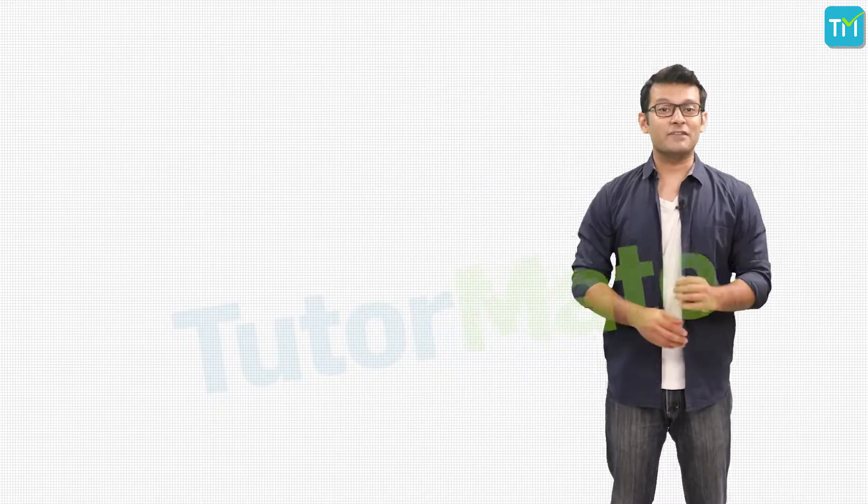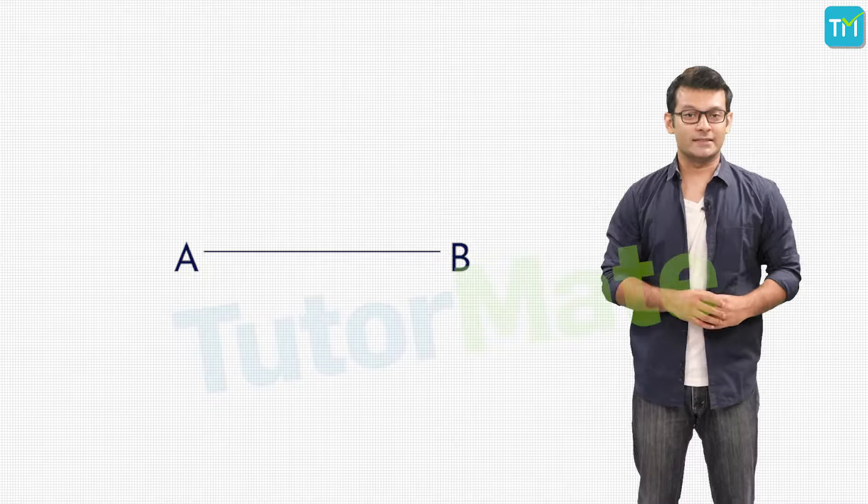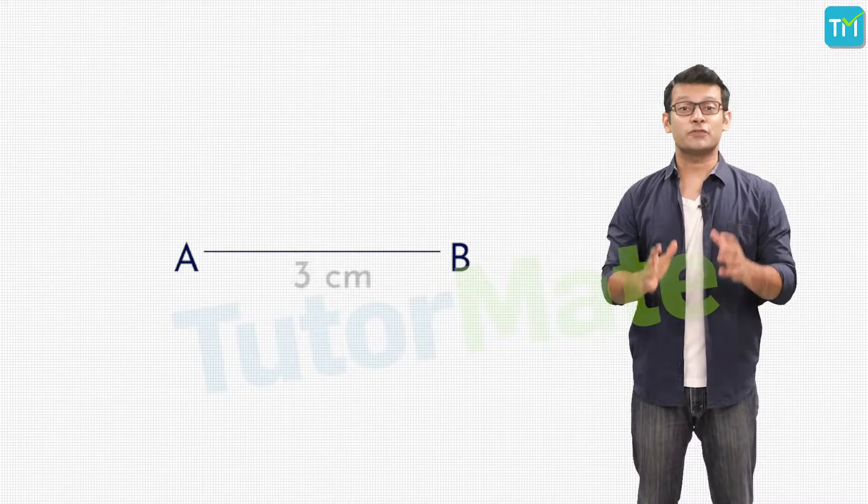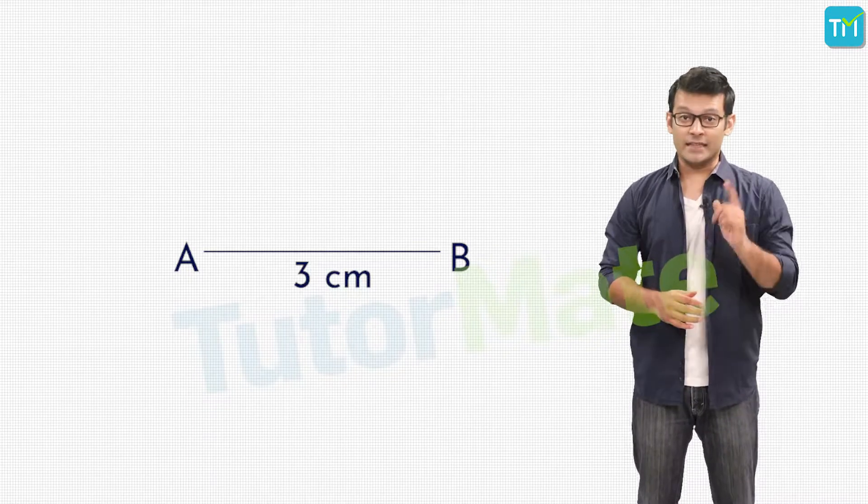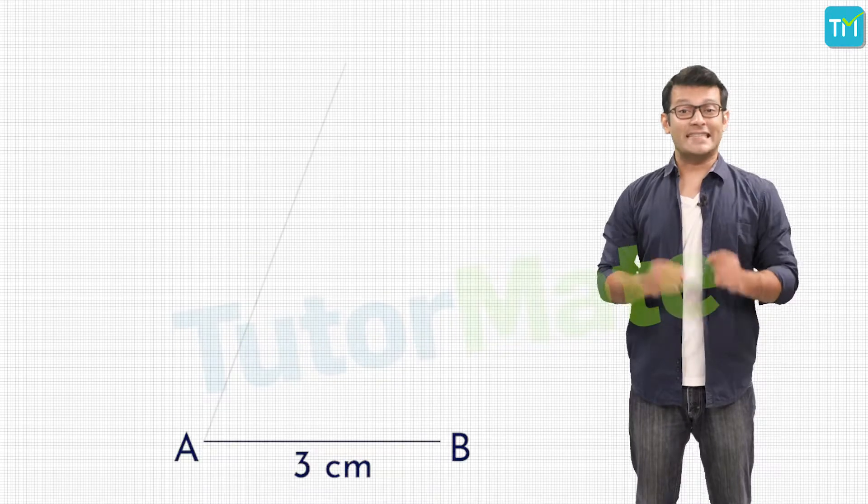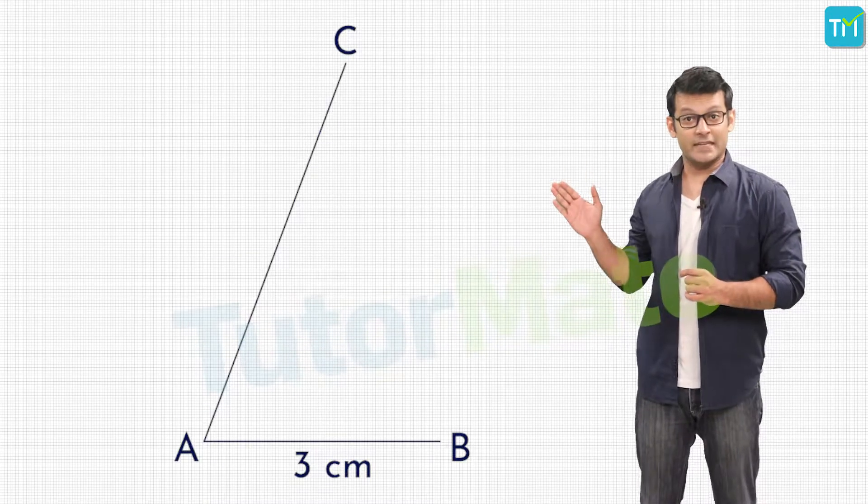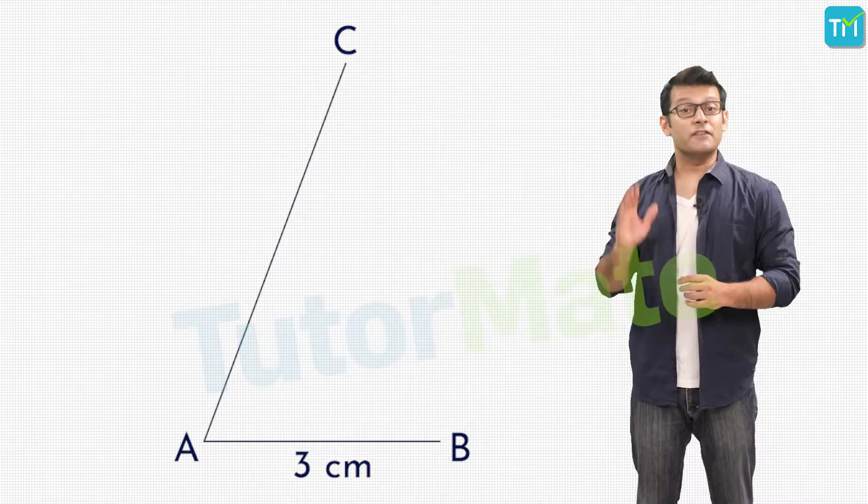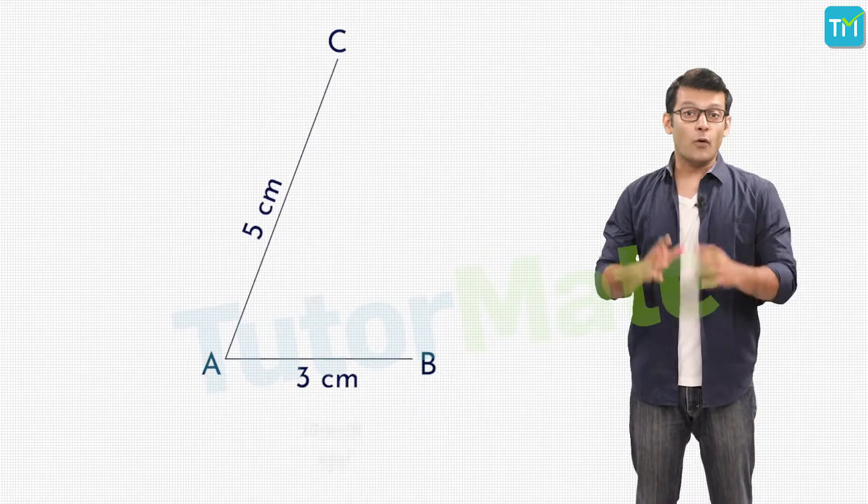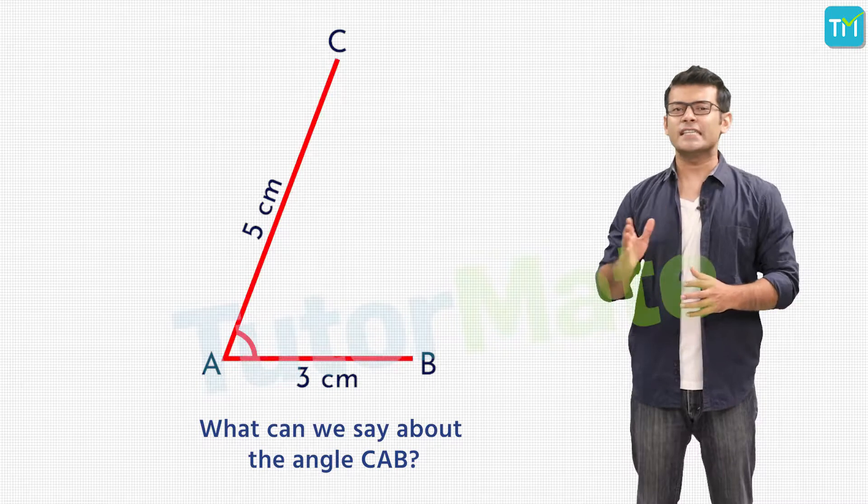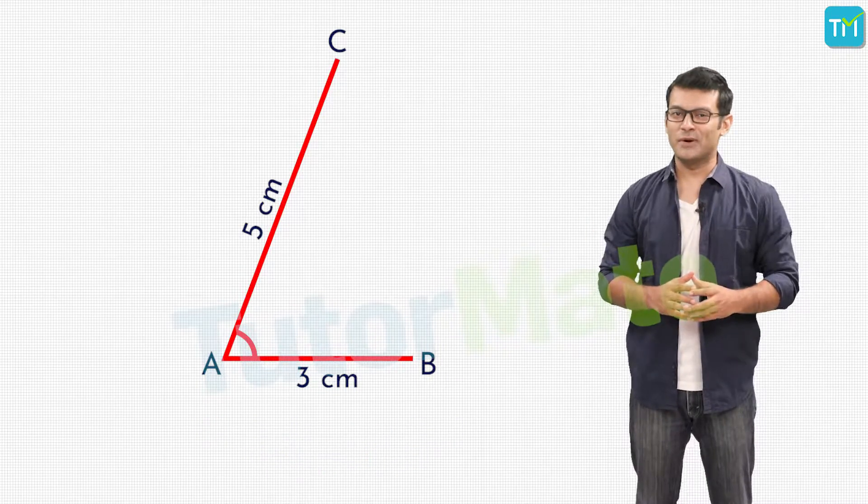Hello! Today we are going to have some fun with trigonometry. Let's say we have a line segment AB and it has a length of three centimeters. Then we have another line segment AC that is inclined to AB like this, and this line segment measures five centimeters.